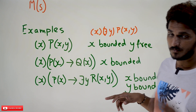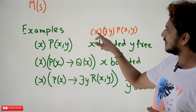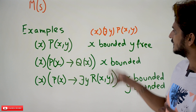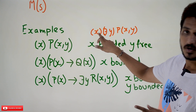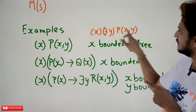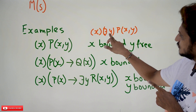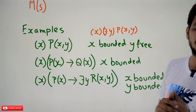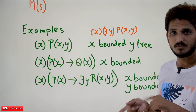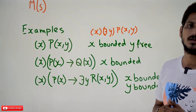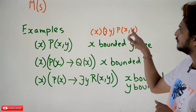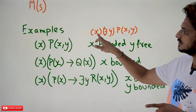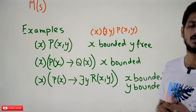Let's take one more example: for all x, there exists y, P(x, y). The scope of the 'for all x' quantifier belongs to this entire equation, and the scope of 'there exists y' also belongs to this equation, because both quantifiers are mentioned before P(x, y). So both x and y are bounded variables — x is bounded to the 'for all' quantifier, and y is bounded to the 'there exists' quantifier.